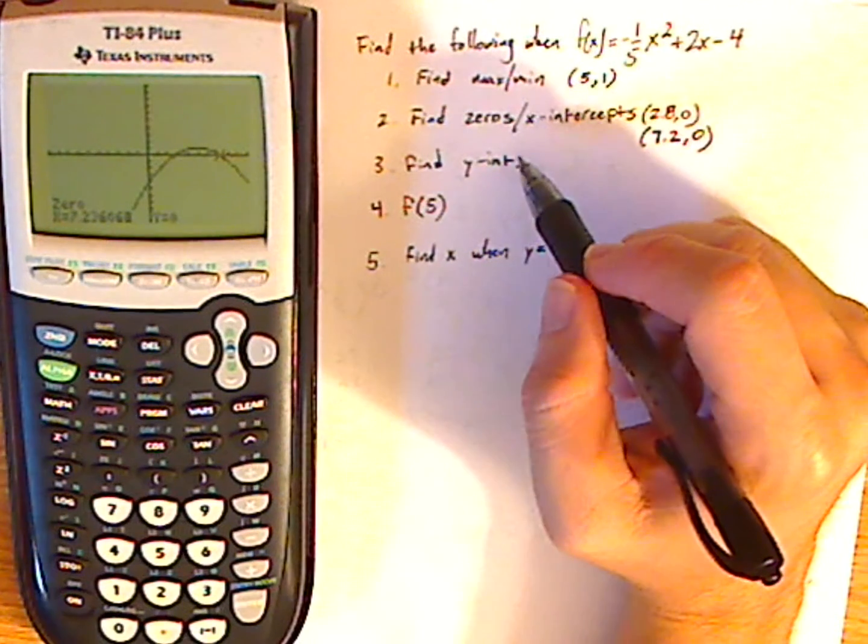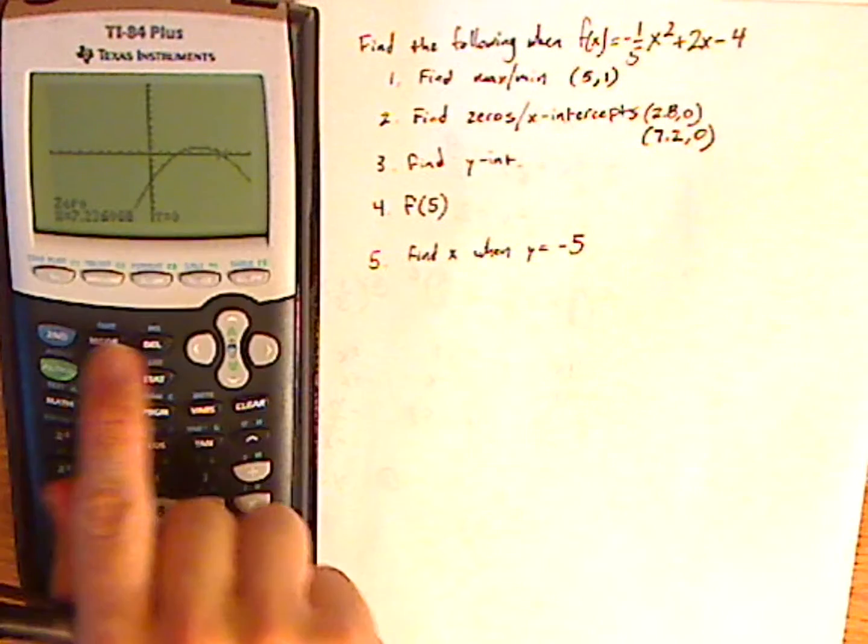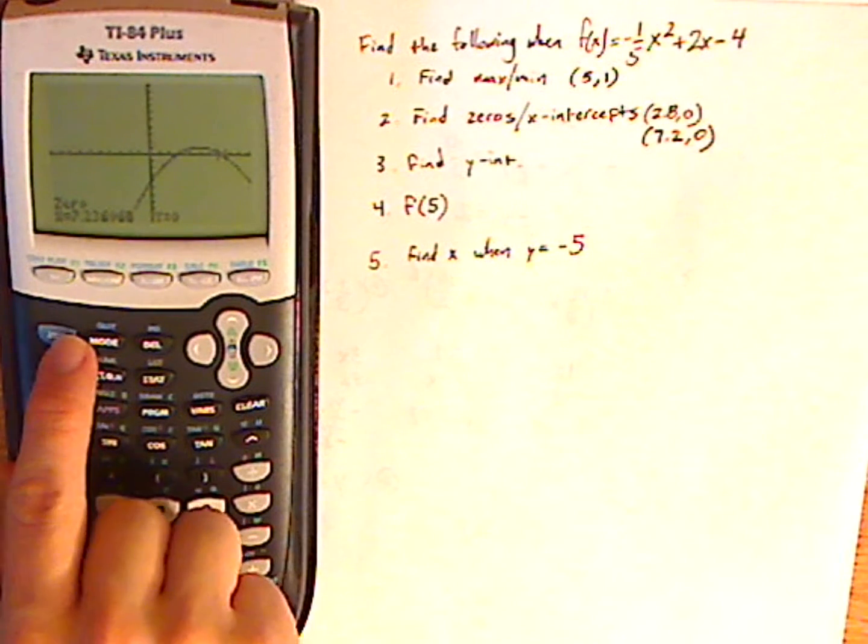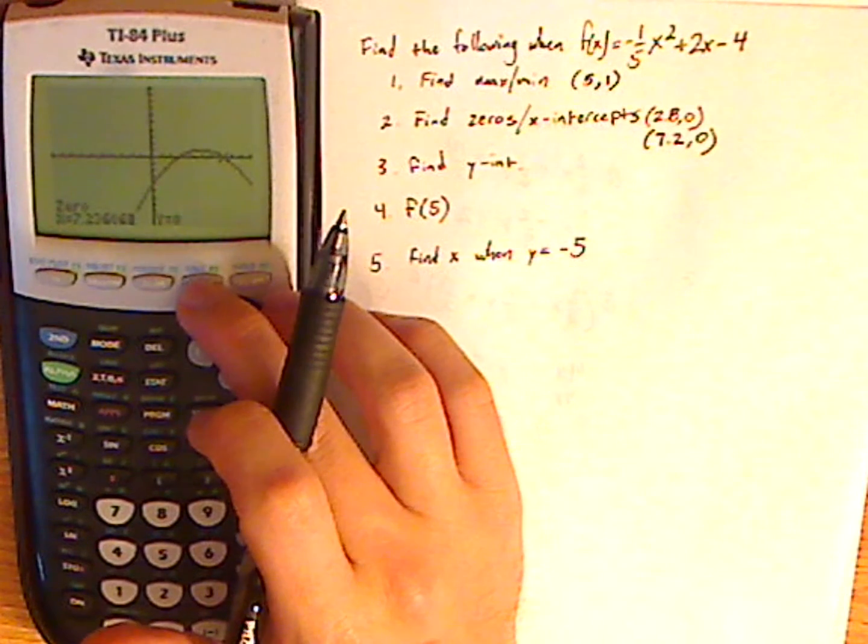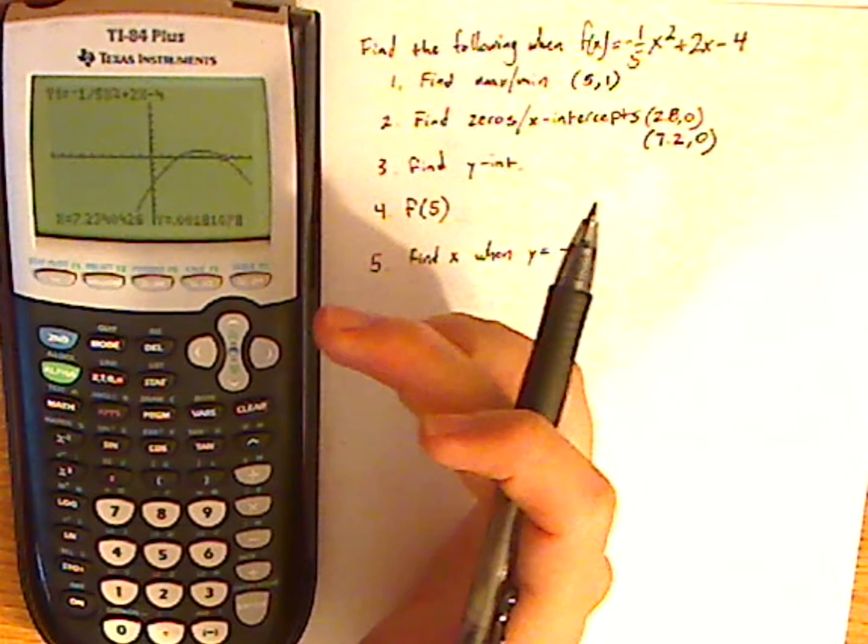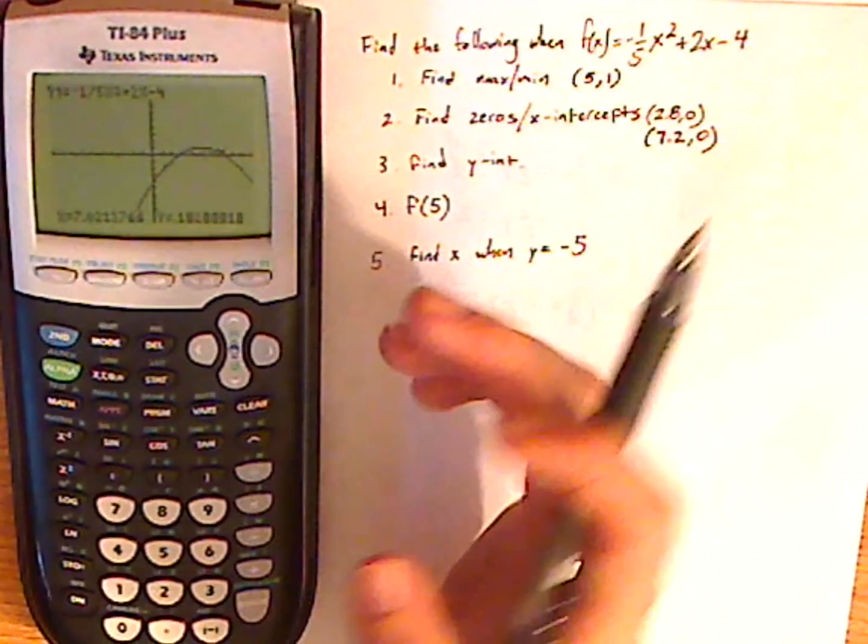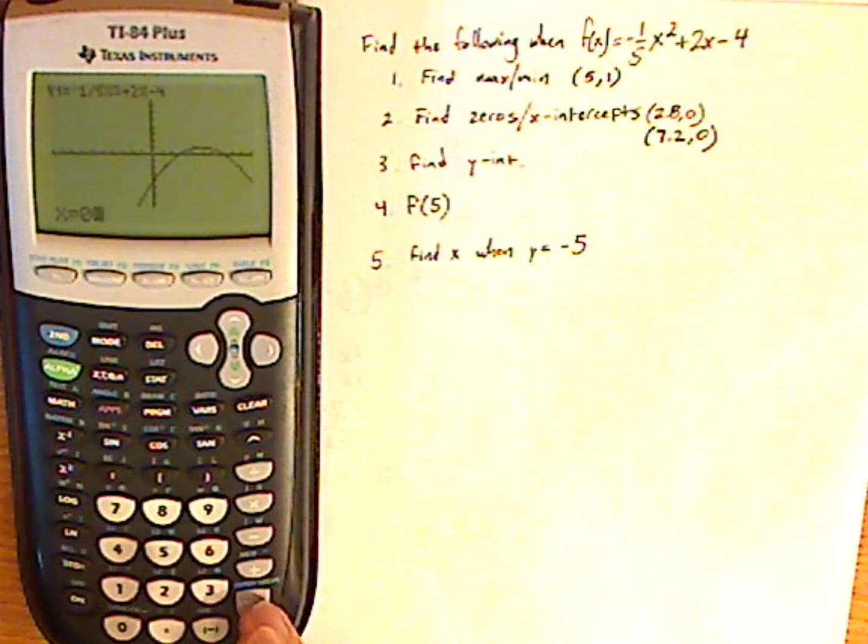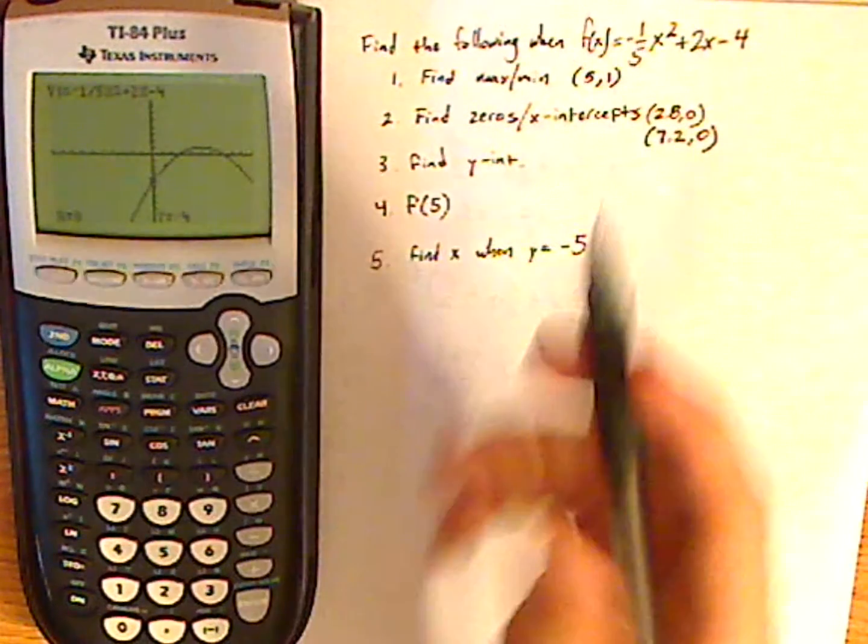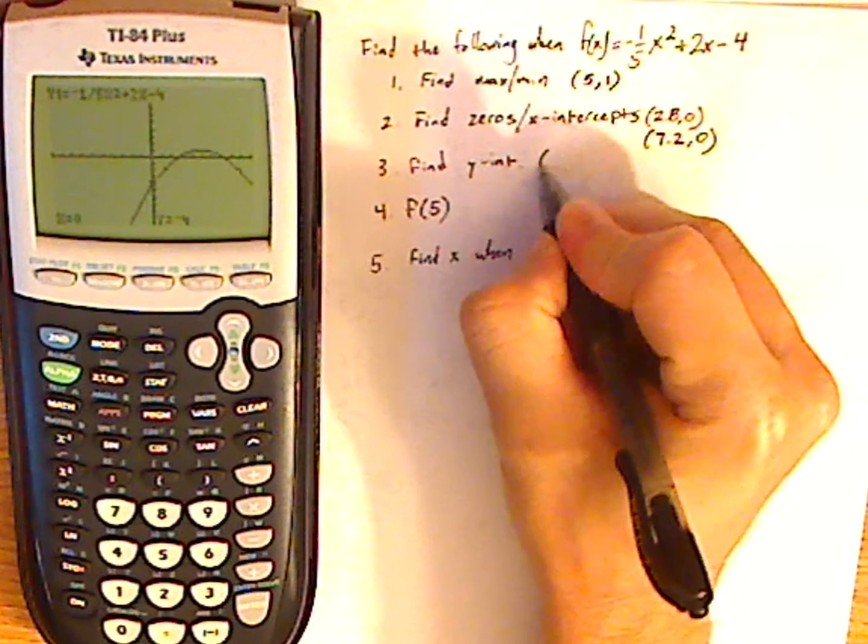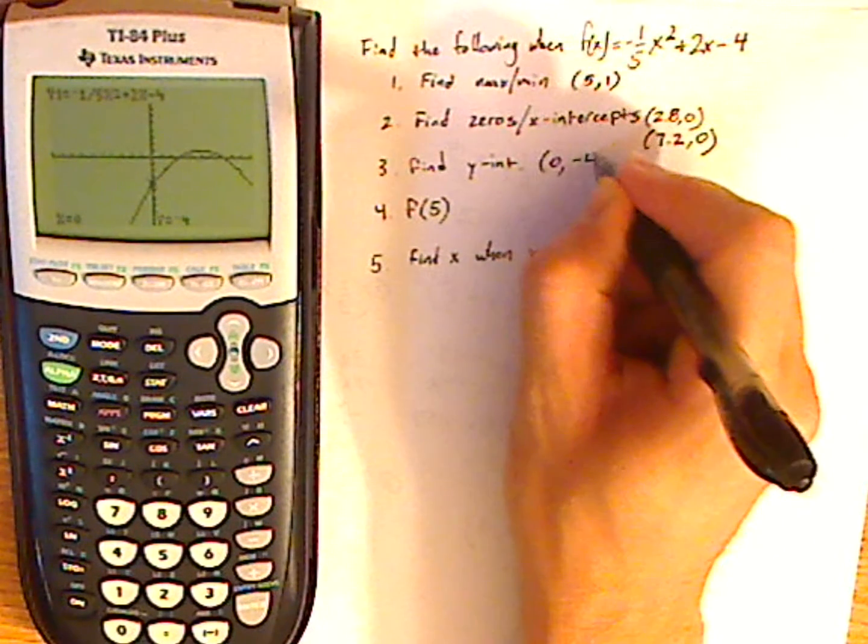Now I'm going to find the y-intercept. The y-intercept is really easy to find. So let's get out of this. Well, you know what, I can find it on here. I can use my trace button, trace. Now, once I hit trace, it's going to trace it, obviously, but then I can just put in 0 for x. Let's put 0 for x. It shows me my y-value. So my y-intercept is 0, comma, negative 4.